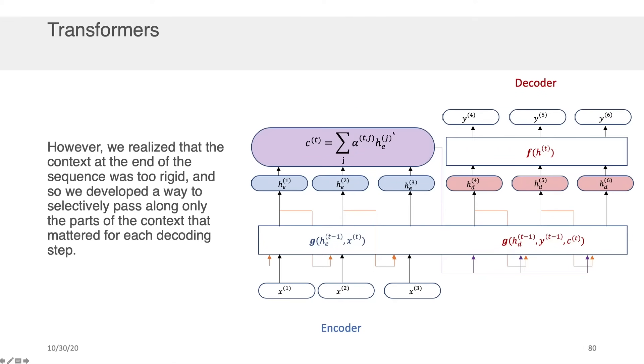So remember this attention mechanism says if I'm trying to decode HD4 for example, it tells me what should I pay attention to in HE1, 2, and 3 for the specific decoding task here. And similarly it tells me what to pay attention to when I'm doing HD5 and HD6 and so on.